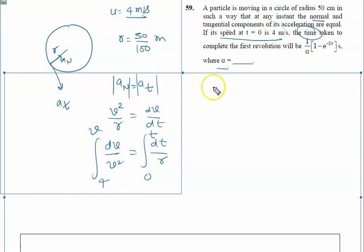So the next step: dx by x² is minus 1 by x. So dv by v² is minus 1 by v, with limits of integration from 4 to v.